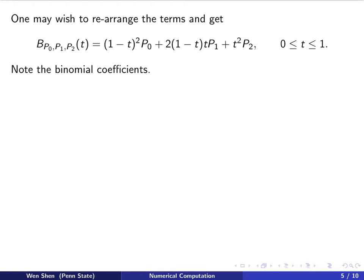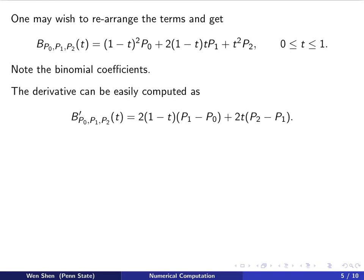We can rearrange the terms and collect the points P0, P1, and P2 as like terms with their coefficients. For P0, we have (1-t)^2. For P1, we have 2(1-t)t. For P2, we have t^2. Note the binomial coefficients: 1, 2, 1. That's the binomial coefficient for a quadratic polynomial (x + y)^2 when you expand it.